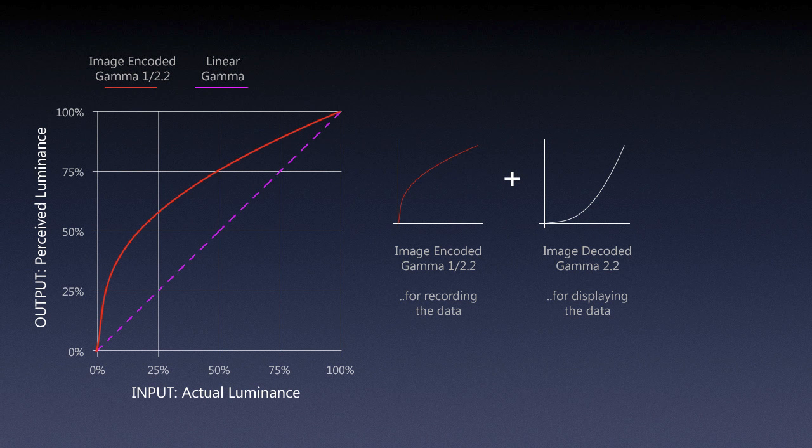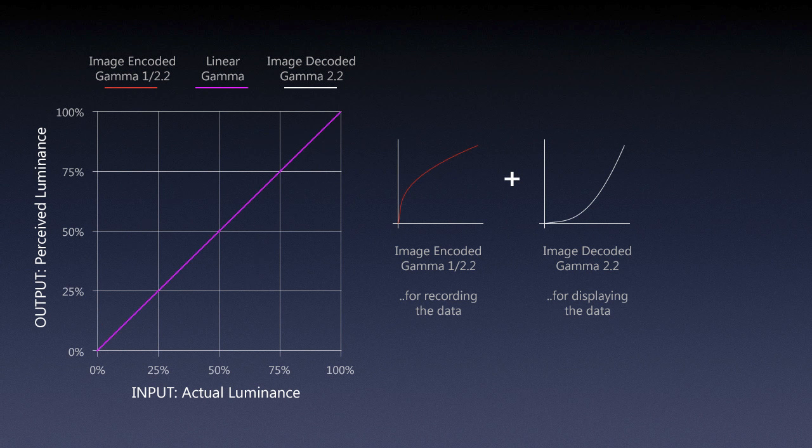We need to add another curve called image decoding, with a gamma of usually 2.2 or whatever is in the image's profile. For example, sRGB has an approximate gamma of 2.2, Adobe RGB also 2.2, while ProPhoto and ColorMatch have 1.8. The image-decoded version would be curved in the opposite direction — this is for displaying our data.